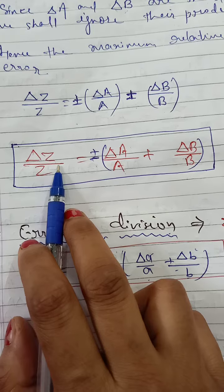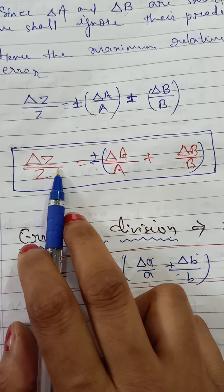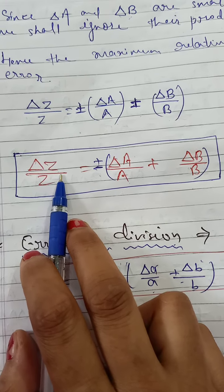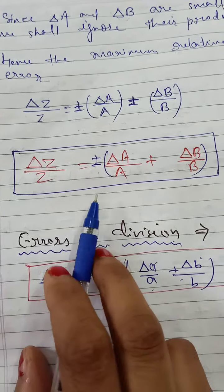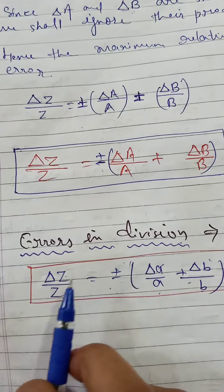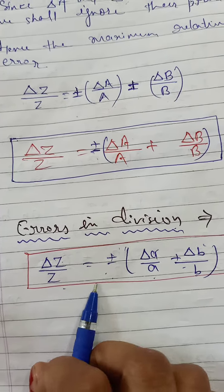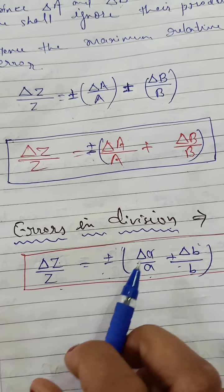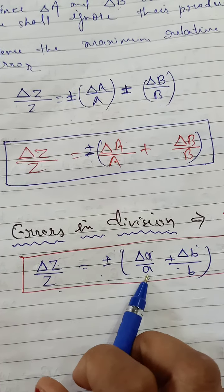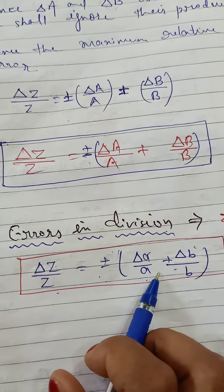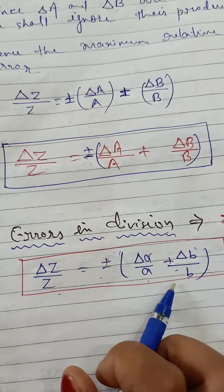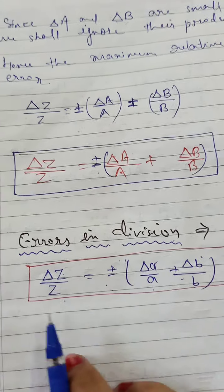The same formula applies for error in division. It will be: delta-z upon z is equal to plus minus delta-a upon a, plus minus delta-b upon b.